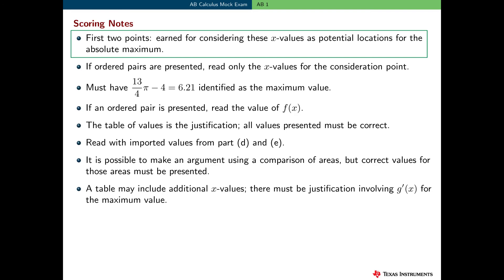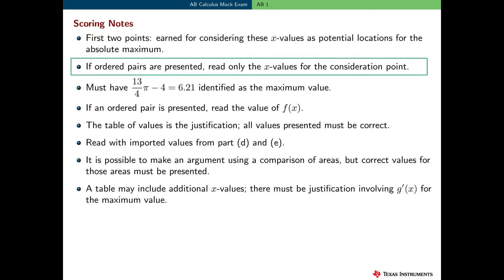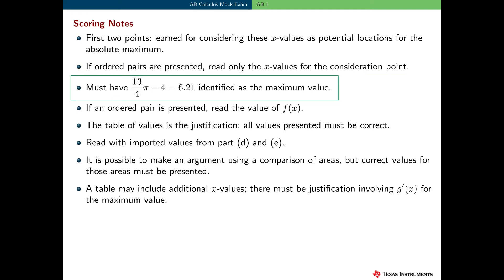Here are some interpretations of these guidelines to help award points. The first two points are for considering the appropriate x values as possible locations for the absolute maximum. Generally, the word 'considers' is interpreted very loosely — for example, if a student simply writes g of negative 2 in their response, they've considered x equal negative 2. If ordered pairs are presented, we can read the x values for the consideration points. To earn the answer point, the student must clearly identify 13 over 4 pi minus 4 as the maximum value — with an arrow, a box, or in a sentence.